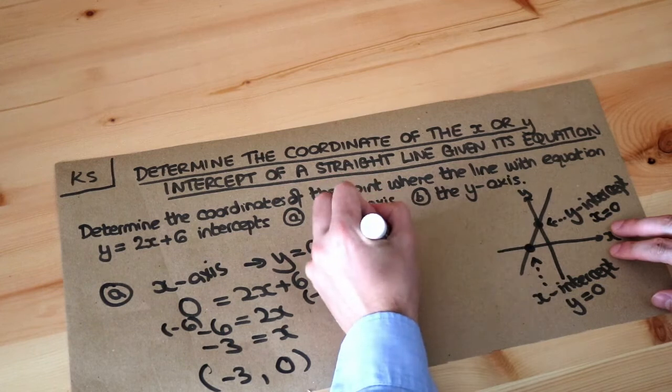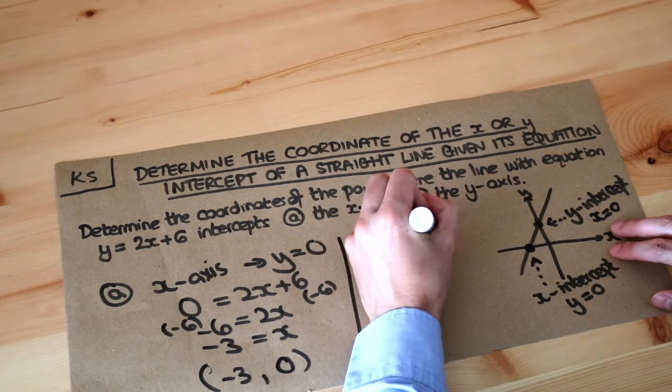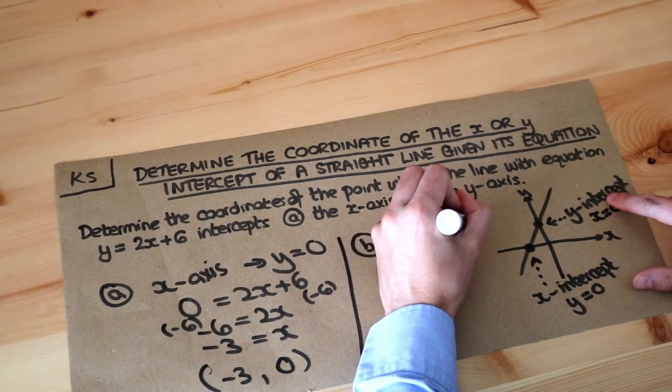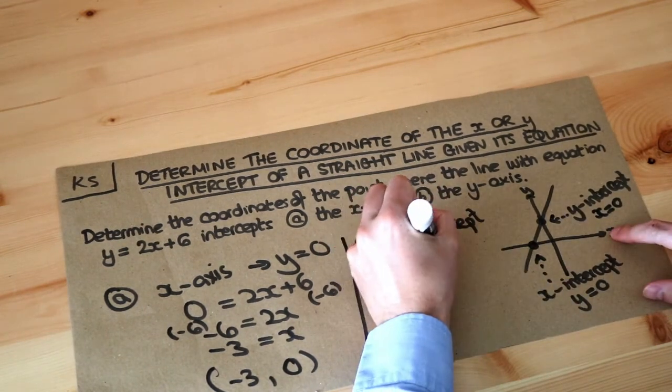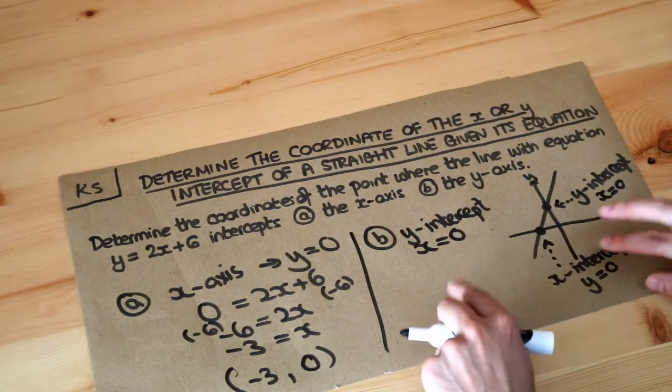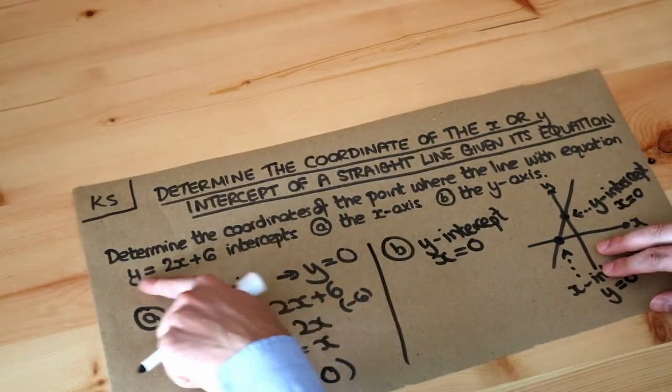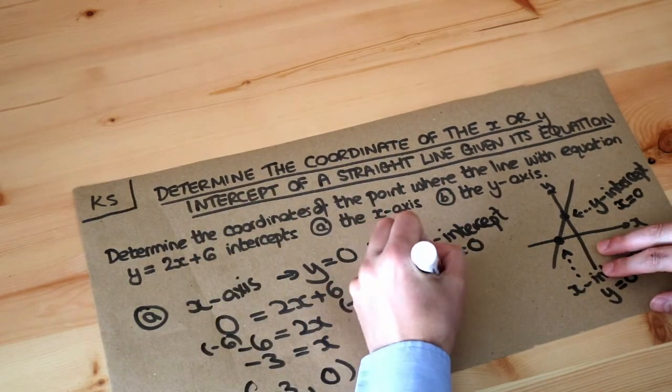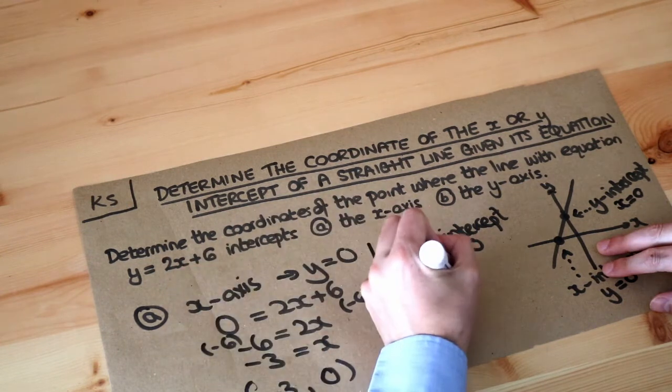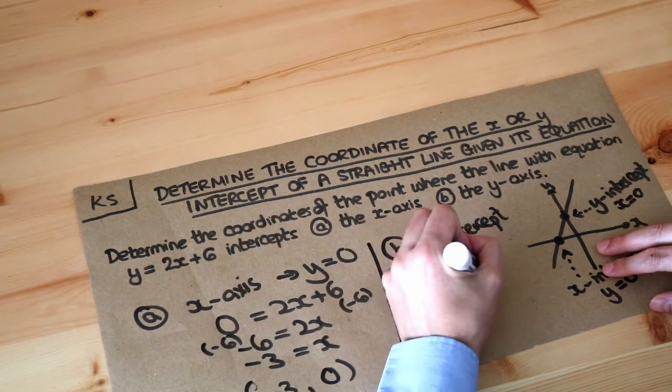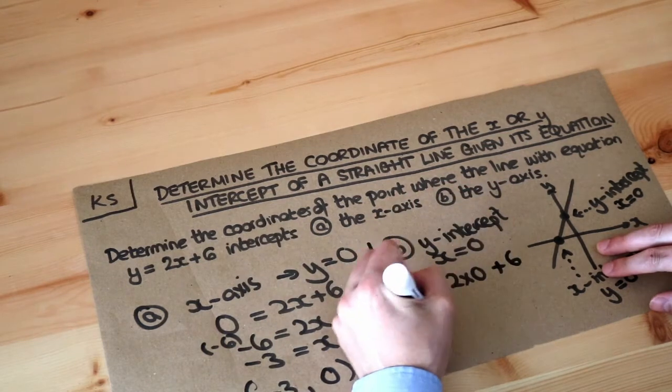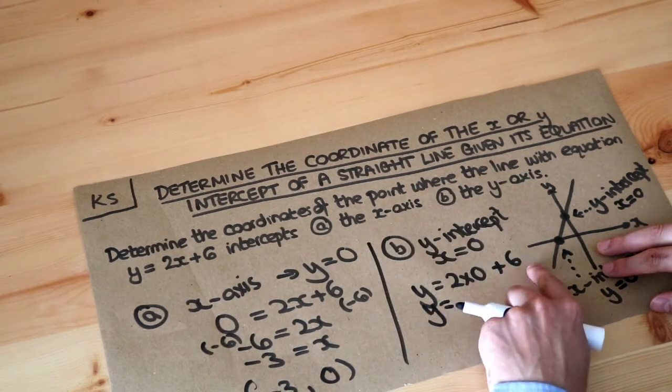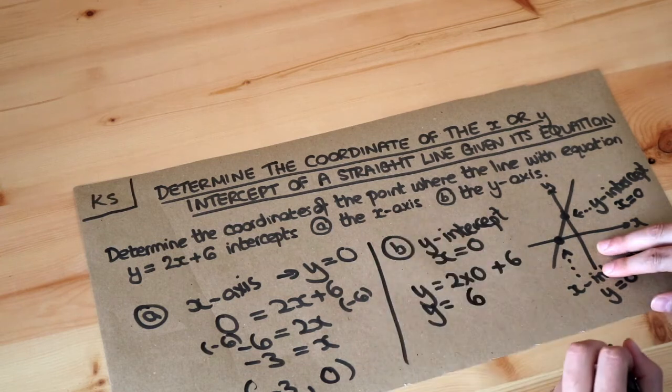So what about the y intercept where it cuts the y axis? Well we said over here when we're on the y intercept x is zero. So if we substitute x is zero into this equation we have y is equal to two times zero. Two x means two lots of x so two times zero plus six. Now two times zero is zero, plus six is six, and we get six.